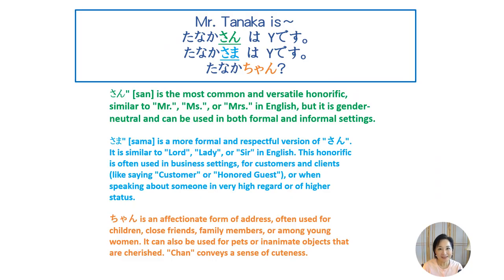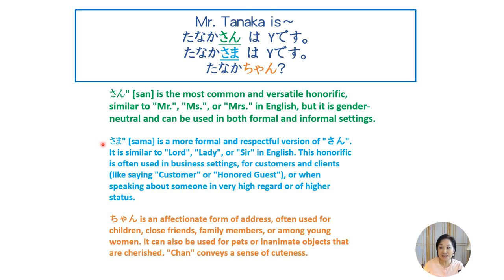We talked about Tanaka-san just now. San is the same as Mr., Mrs., or Miss in English, and we attach it after their name. It is gender-neutral and can be used in both formal and informal settings. Sama is a more formal version — you will probably hear this when you go to Japan and a store clerk addresses you with Sama to show extra respect and formality, if they know your last name.